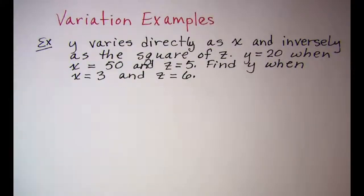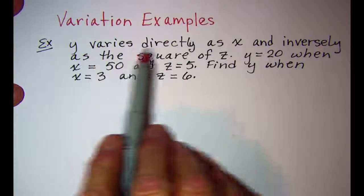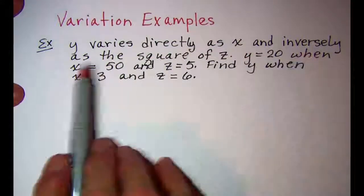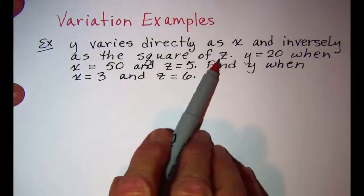In this video we'll be doing some variation examples. Our first problem, y varies directly as x and inversely as the square of z.